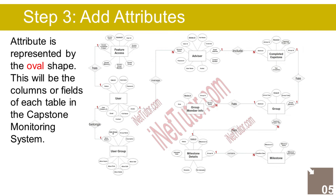The Group entity has the following attributes: Group ID (primary key, represented with underline), Group Code, Group Members, Capstone Project Title, Abstract, and School Year. The Completed Capstone entity has the following attributes: Record ID (primary key, represented with underline), Capstone Project Title, Group ID (foreign key), Year Completed, Abstract, and Advisor ID (foreign key).